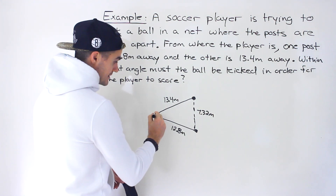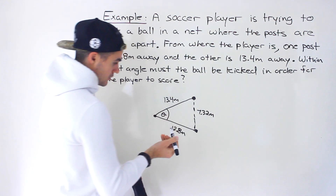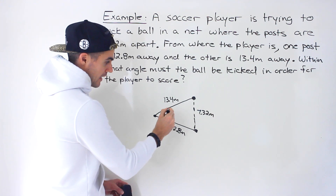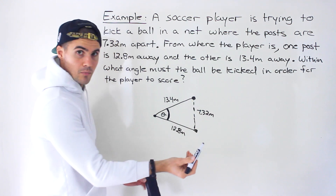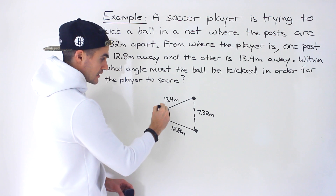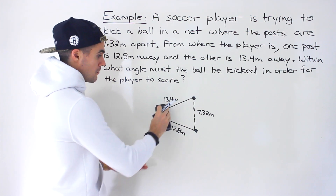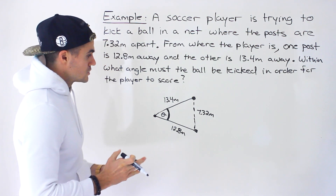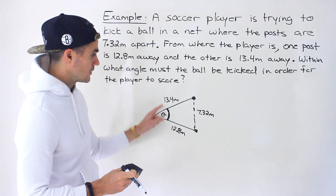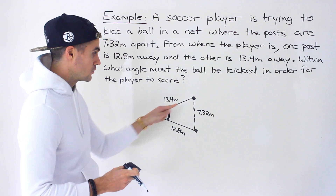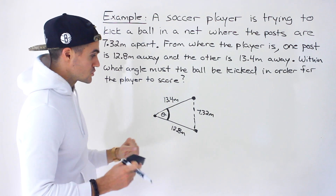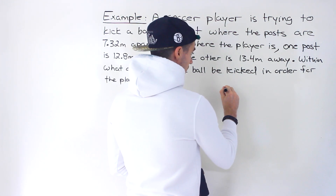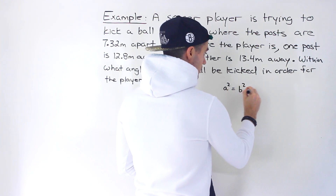What they're asking is: within what angle must the ball be kicked in order for the player to score? Basically this angle right here is what we're solving for — if the ball is kicked within this angle, it goes within the posts. If it's kicked outside that angle, it's going to miss the net. Notice that we have a triangle here with three sides, and we're solving for an angle, so we would use the cosine law.